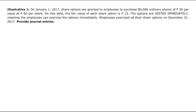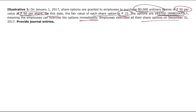Illustrative Problem 1: On January 1, 2017, share options are granted to employees to purchase 80,000 ordinary shares of 50 par value at 60 pesos per share. The fair value of each share option is 15 pesos. The options vest immediately, meaning employees can exercise the options right away. Employees exercise all their share options on December 31, 2017. The requirement is to provide journal entries.